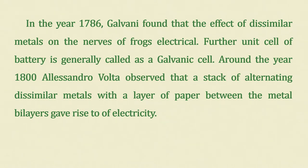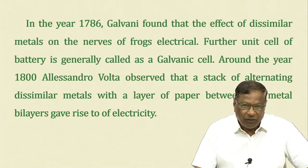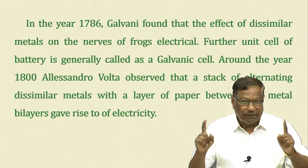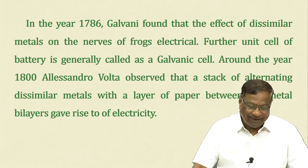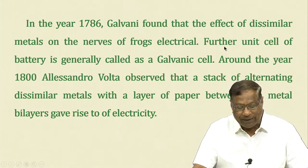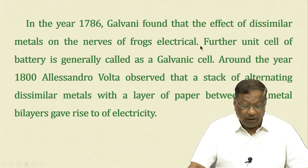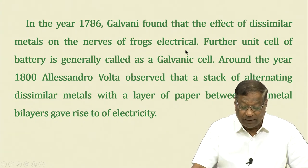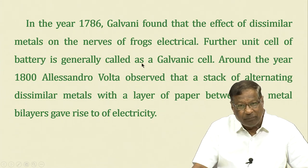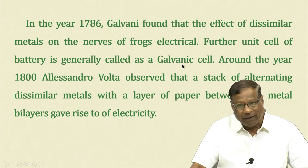First, a little bit about the history. The history of batteries is as old as electrochemical technology. The first effect was by Galvani, an Italian scientist who found that frog legs moved when electrical metals were connected to the nerves of the frogs. He showed that electrical impulses can be the root cause of movement of the frog's nerves. Based on his first observation, the unit cell of a battery is generally called a galvanic cell.